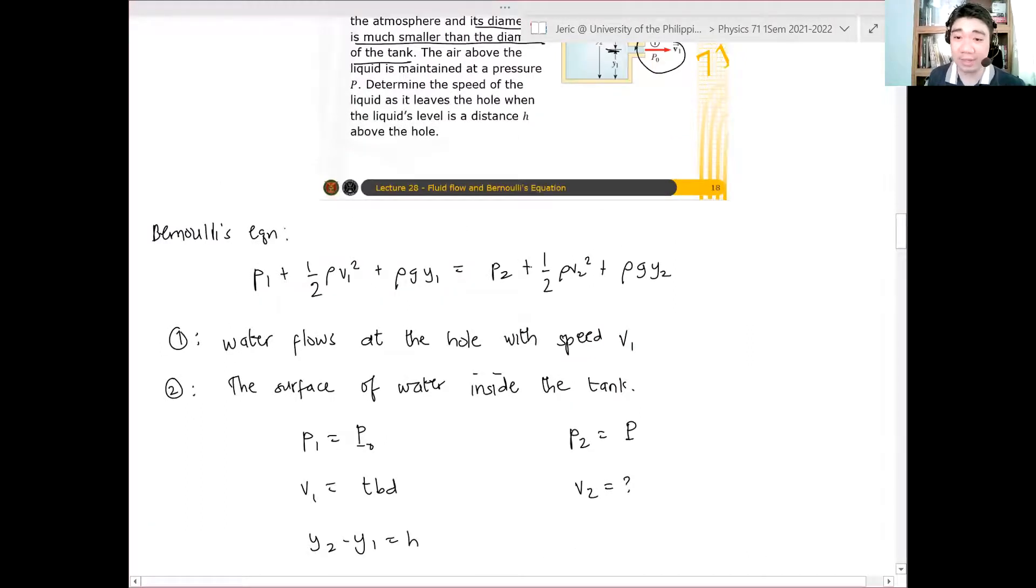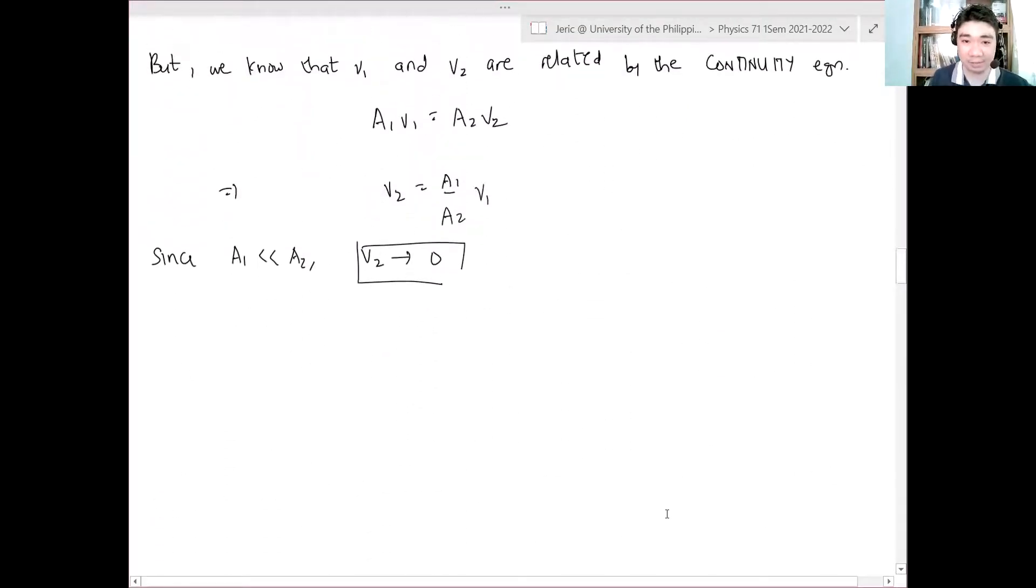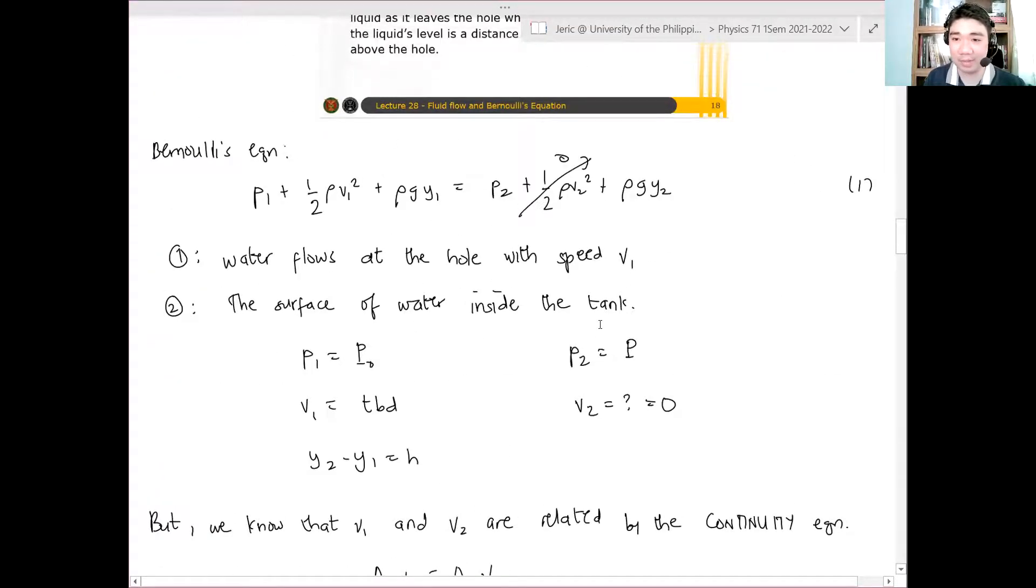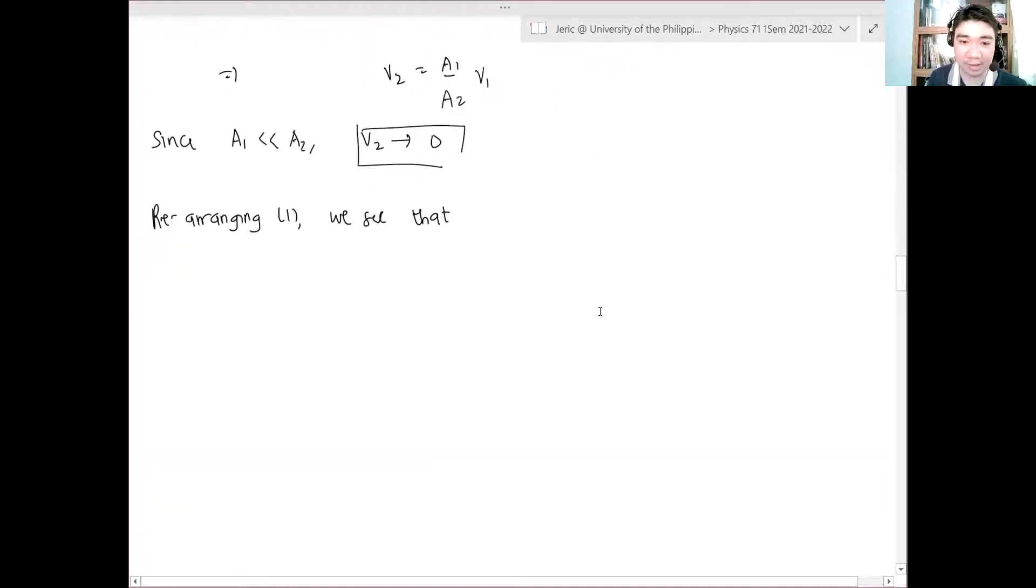And therefore, I can now just remove this term here. And hence, I can rearrange equation one. Rearranging equation one, this is equal to zero. Rearranging equation one, we get P1 plus one half rho V1 squared plus rho G Y1 equals P2 plus rho G Y2. The second term one half rho V2 squared becomes zero, so we can remove it. Therefore, I can solve for V1.